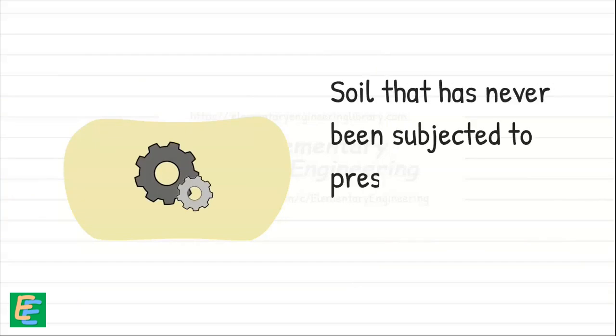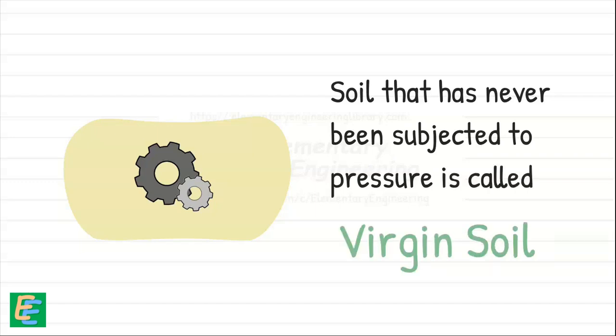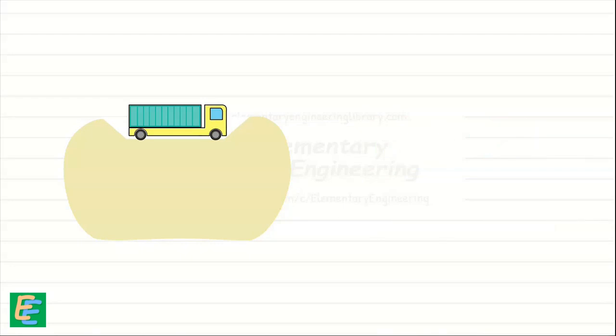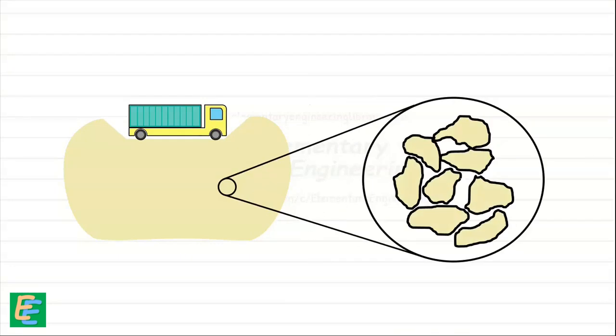In geotechnical engineering, a soil that has never been under any significant pressure before is called a virgin soil. Such soils are very compressible, which means they will deform and settle a considerable amount when the load is applied. This is because their particles are loosely packed and have large volume of voids.